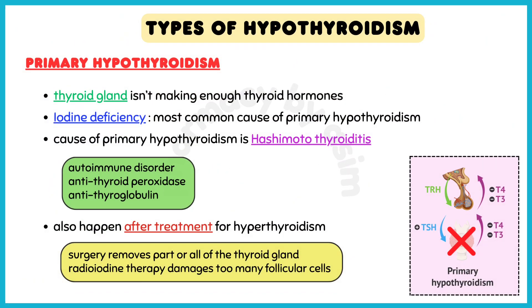In primary hypothyroidism, the thyroid gland is the problem because it isn't making enough thyroid hormones. Iodine deficiency is the most common cause in low-income countries that don't fortify foods with iodine. In countries that do fortify foods with iodine, the most common cause is Hashimoto thyroiditis, an autoimmune disorder where T-cells and autoantibodies like antithyroid peroxidase and antithyroglobulin infiltrate the thyroid. Primary hypothyroidism can also happen after treatment for hyperthyroidism, either because surgery removes part or all of the thyroid gland or because radioiodine therapy damages too many follicular cells.